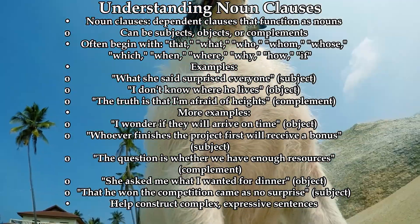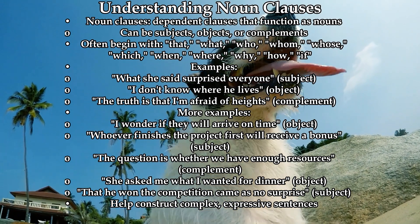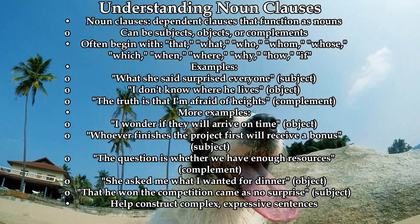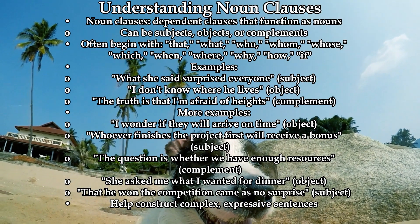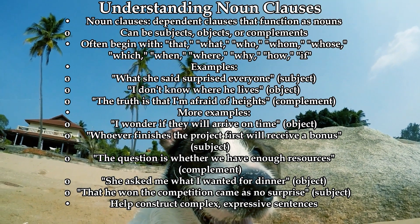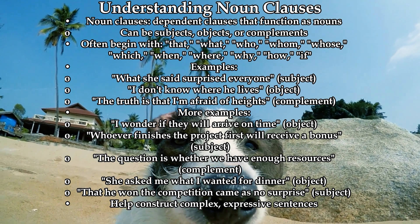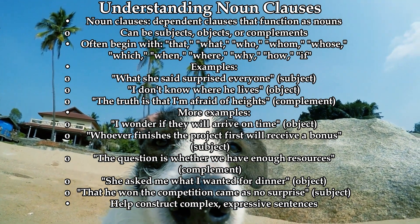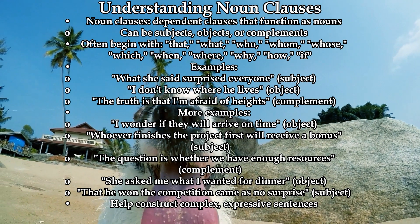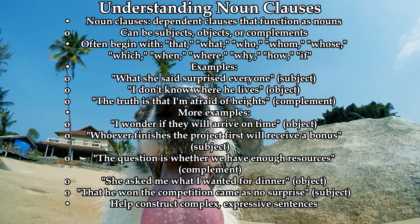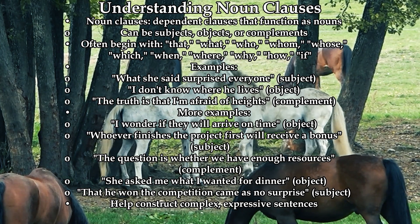Noun clauses are dependent clauses that function as nouns in a sentence. They can act as subjects, objects, or complements. Noun clauses often begin with words like 'that,' 'what,' 'who,' 'whom,' 'whose,' 'which,' 'when,' 'where,' 'why,' 'how,' or 'if.'